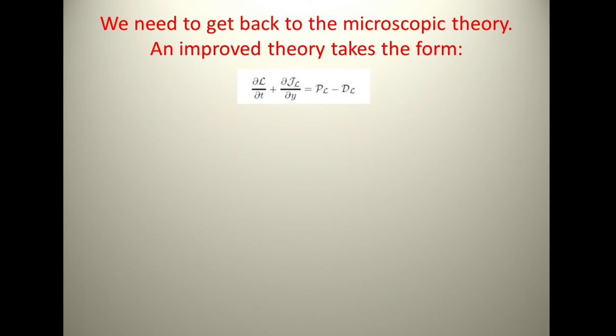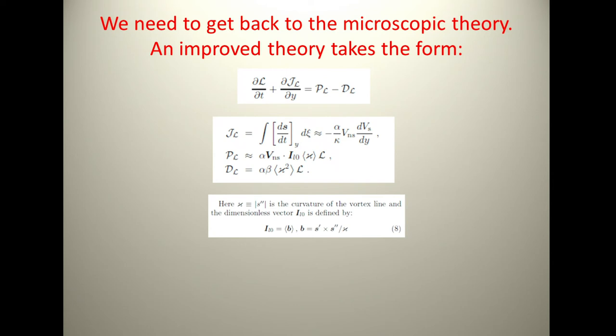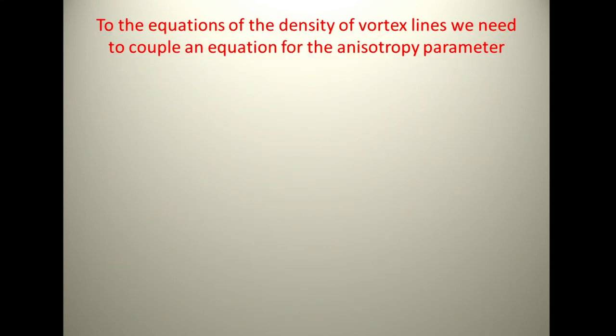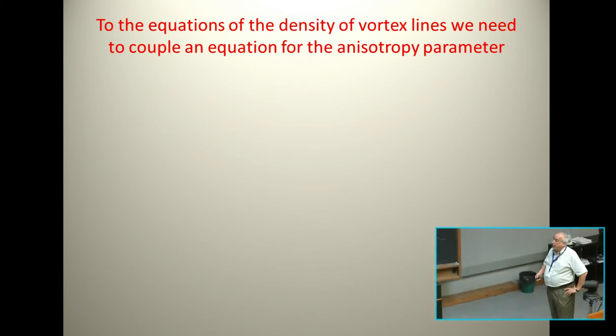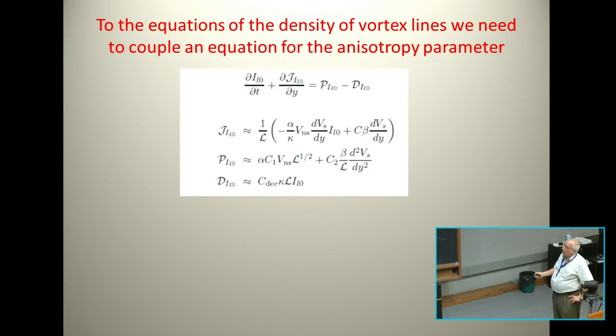You have to write now a new equation for the density dL/dt. You do the microscopics. You now get that this is proportional to the anisotropy term. There is the object kappa squared, which is the curvature of the vortex lines. To the equations of the density of vortex lines, we need to couple an equation of the anisotropy parameter at least.